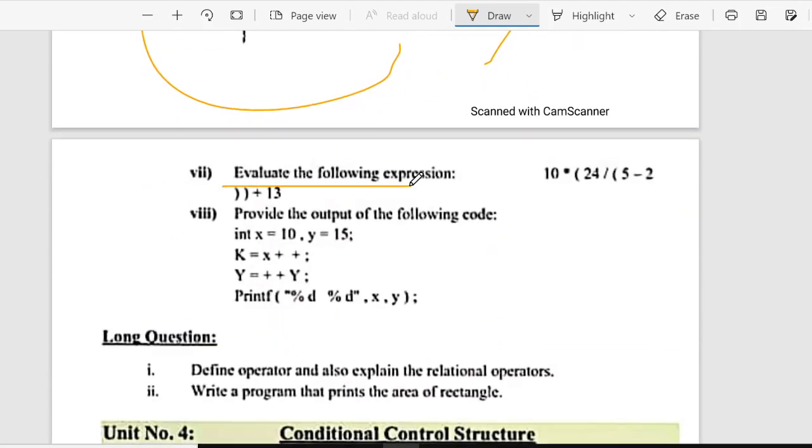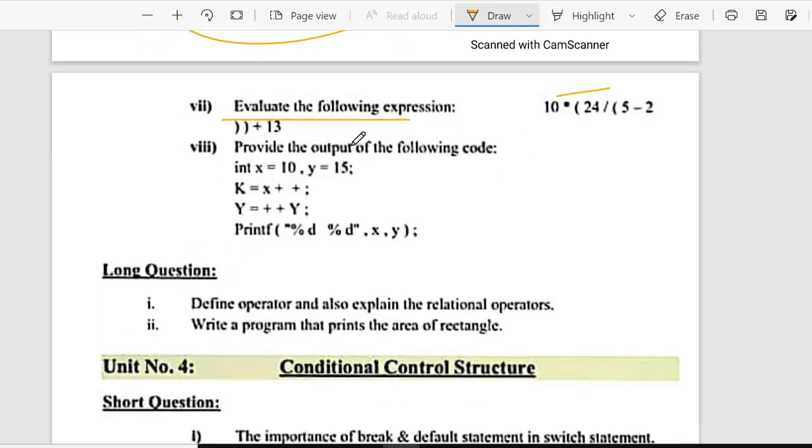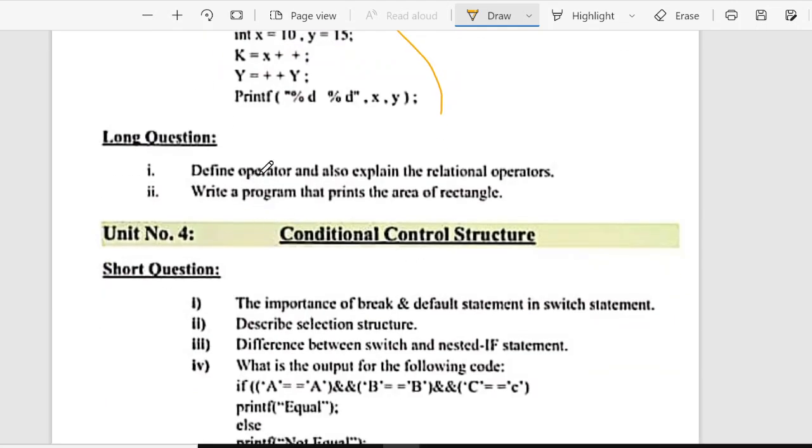Seventh is, evaluate the following expression. And eighth is, provide the output of the following code. You have to give the output of the following code. Long question, define operator and explain the relational operator. Number two, write a program, area of rectangle.